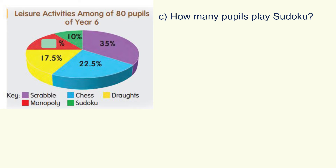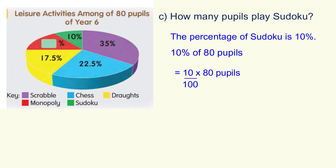Look at C: How many pupils play Sudoku? The percentage of Sudoku is 10%. So, 10% of 80 pupils play Sudoku. 10 over 100, multiplied by 80 pupils, we will get 8 pupils. So the number of pupils who play Sudoku is 8.